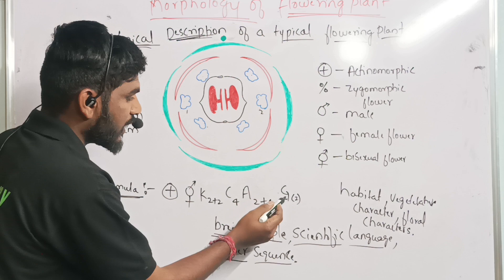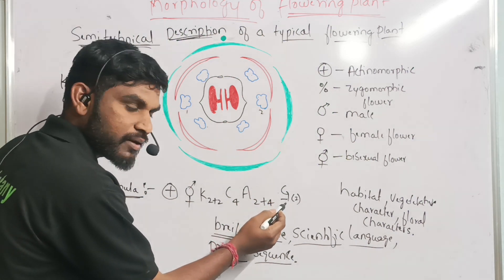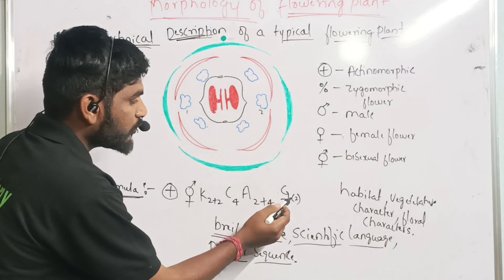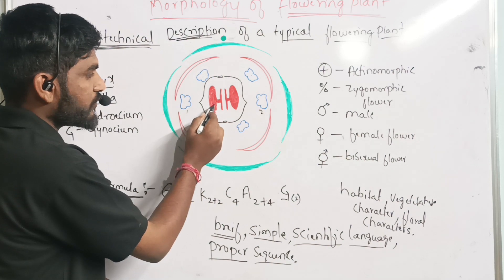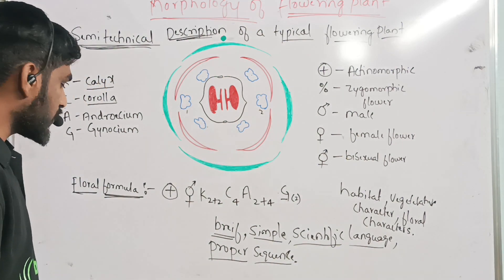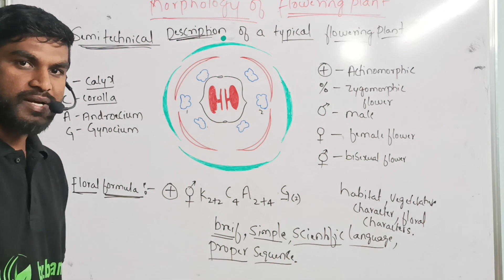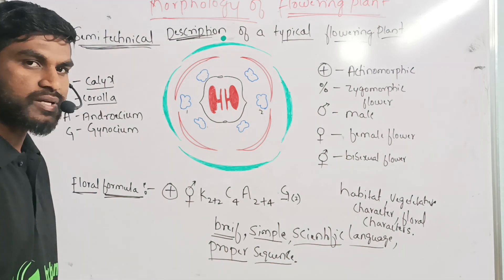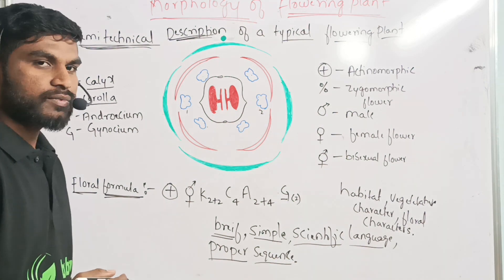Gynoecium, G stands for gynoecium. Here, superior ovary will be present. There are two gynoecium present - one and two. This is the floral formula of the plants. Especially, we take a mustard plant. Thank you.